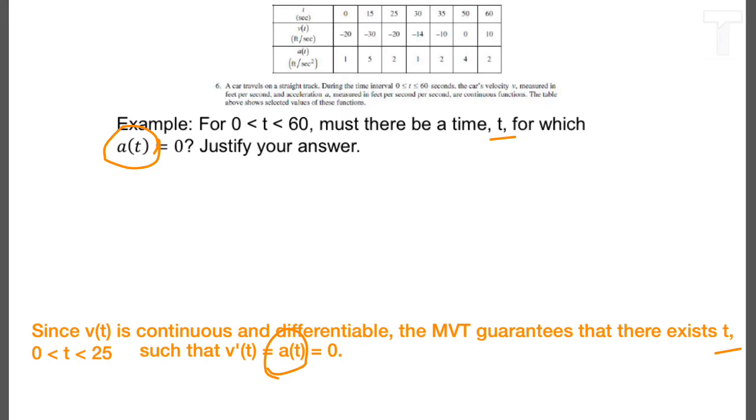So one other fine point. We know that v is continuous because that's given. We know that v is differentiable because its derivative, a of t, exists. So there's your write-up to use the mean value theorem.